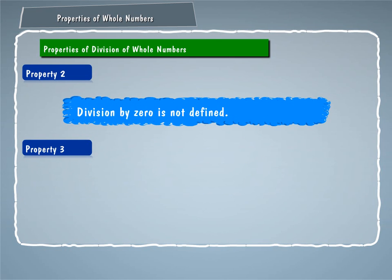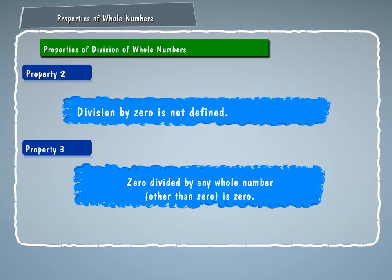Property 3. 0 divided by any whole number other than 0 is 0. For example, 0 divided by 8 is equal to 0.